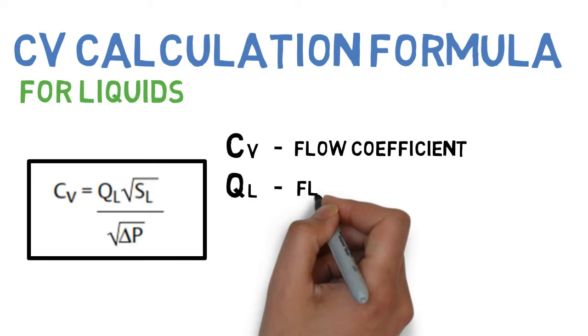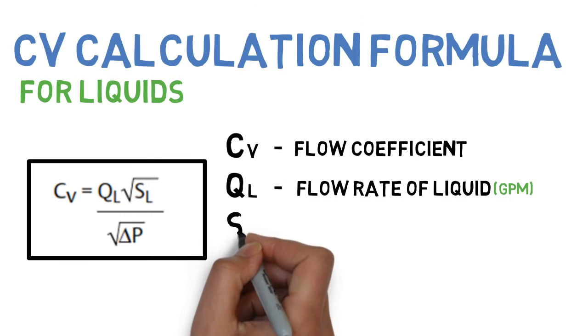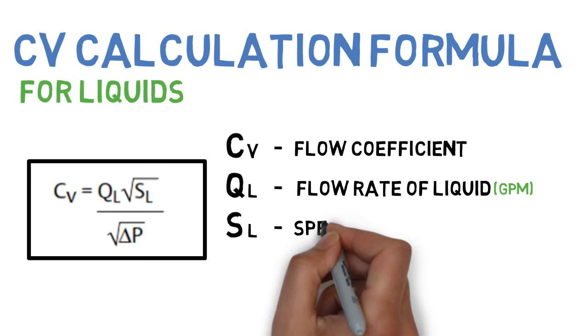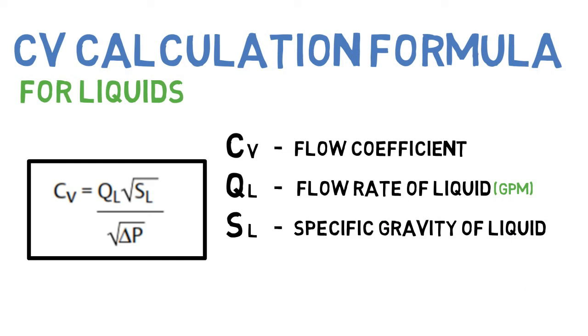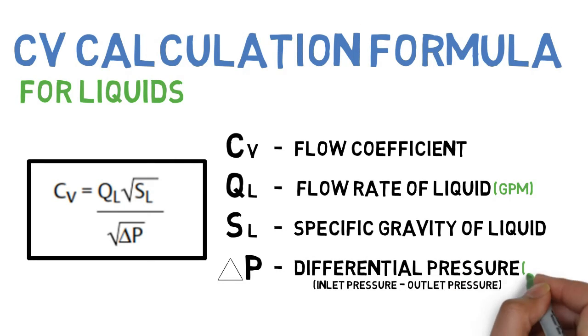QL is flow rate of liquid in gallons per minute. SL is specific gravity of liquid. Delta P is differential pressure, which means inlet pressure minus outlet pressure, in PSI.